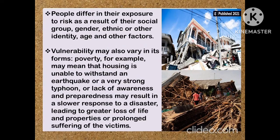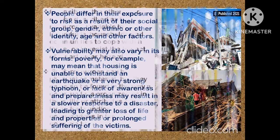People differ in their exposure to risk as a result of their social group, gender, ethnicity, or other identity, age, and other factors. Vulnerability may also vary in its forms. Poverty, for example, may mean that a house is unable to withstand an earthquake or a very strong typhoon, or lack of awareness and preparedness may result in a slow response to a disaster, leading to greater loss of life and properties or prolonged suffering of the victims.